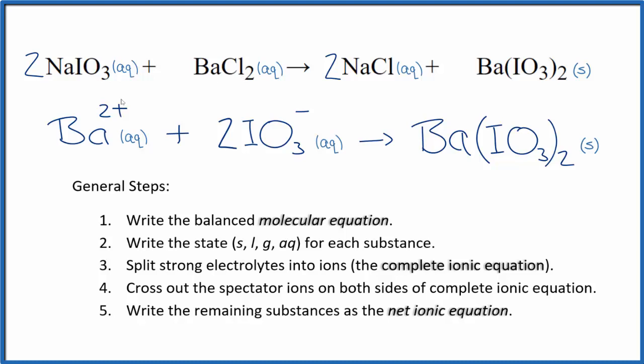Note that charge is conserved. We have a two plus here. Two times one minus, that's two minus. So those add up to zero, net charge of zero. And this is a neutral compound in the products, net charge of zero. Charge is conserved, and if you count the atoms up, they're balanced too. This is Dr. B with the balanced net ionic equation for NaIO3 plus BaCl2. Thanks for watching.